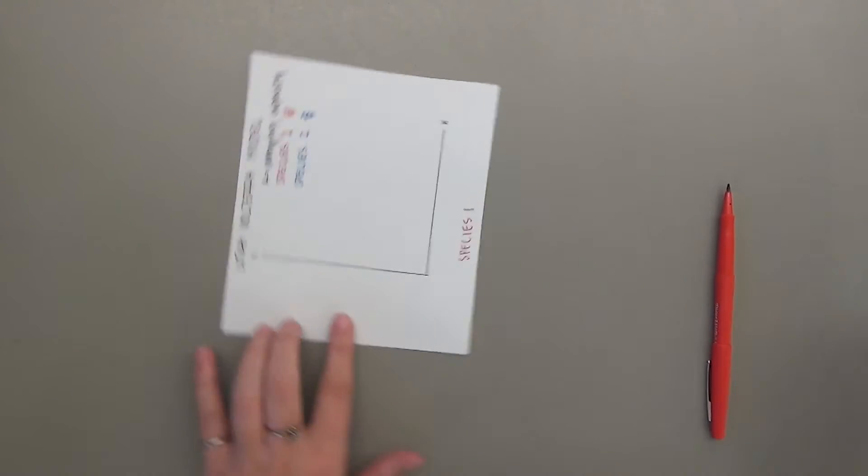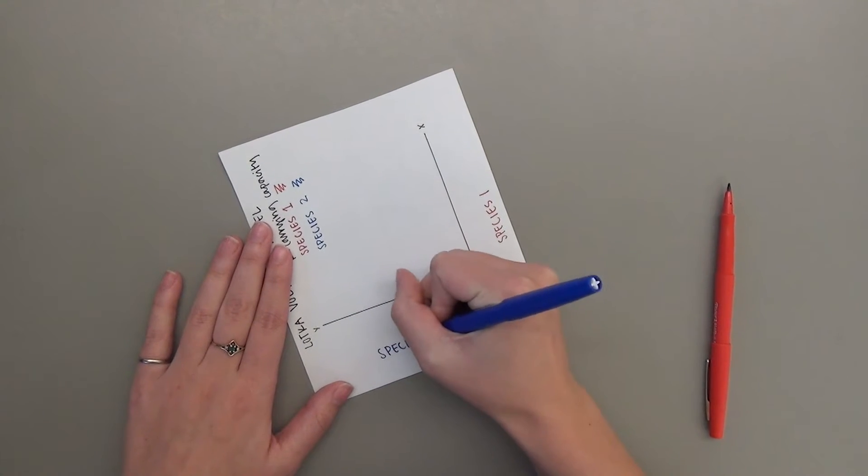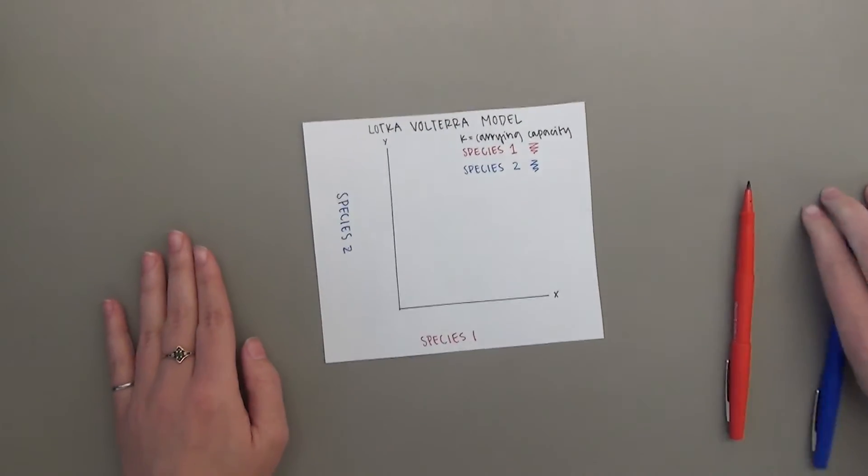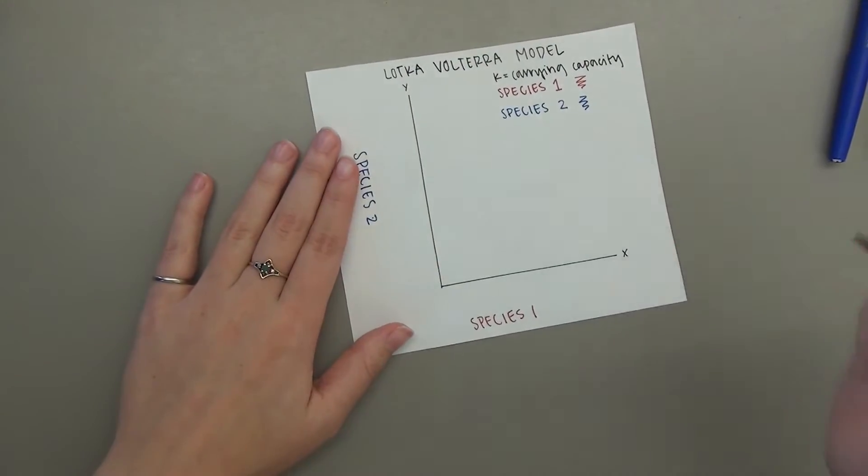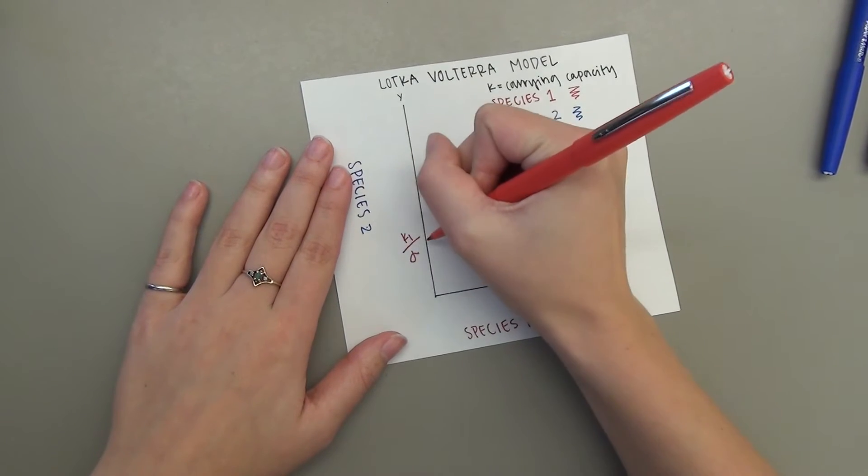To graphically represent this model, the population of species one can be on the x-axis and species two will be on the y-axis. The carrying capacity of each species will be plotted on their respective axes. The alpha and beta are competitive coefficient constants that describe the effect of one species on the other.